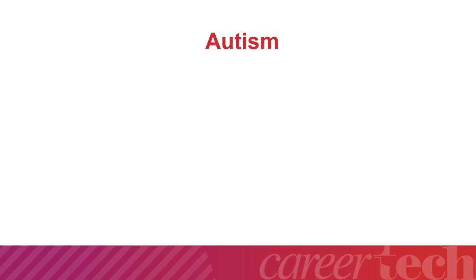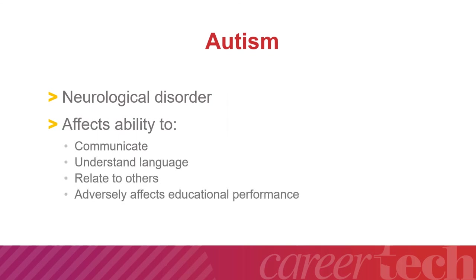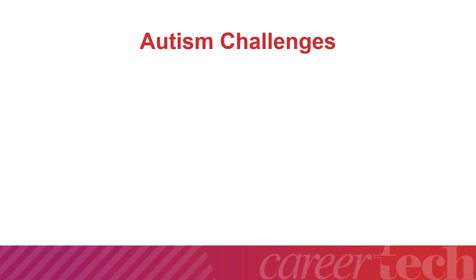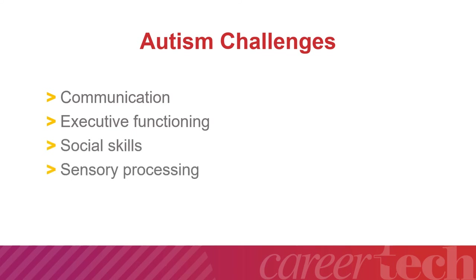Now we will discuss autism. It is a neurological disorder that affects a student's ability to communicate, understand language, and relate to others. It adversely affects a student's educational performance, but the cause is unknown. Students with autism face a variety of challenges in communication, executive functioning, social skills, and sensory processing difficulties. However, it is a spectrum disorder, so not all students with autism have every challenge — some are very low functioning while others are highly intelligent.